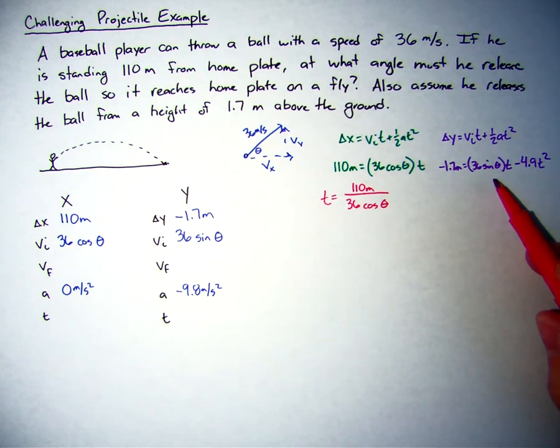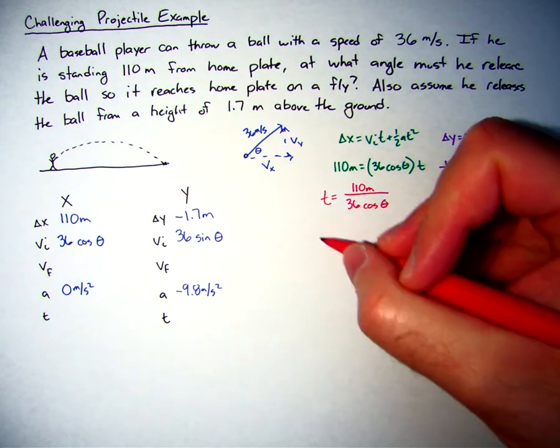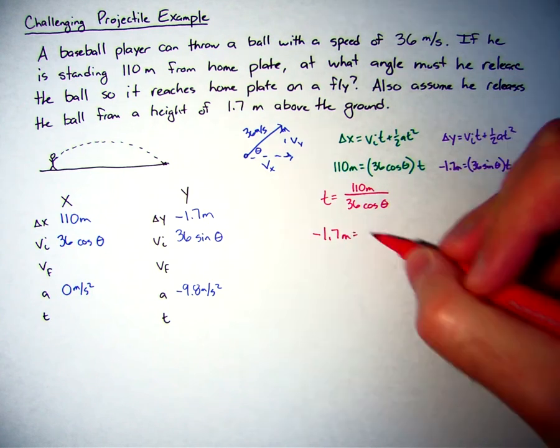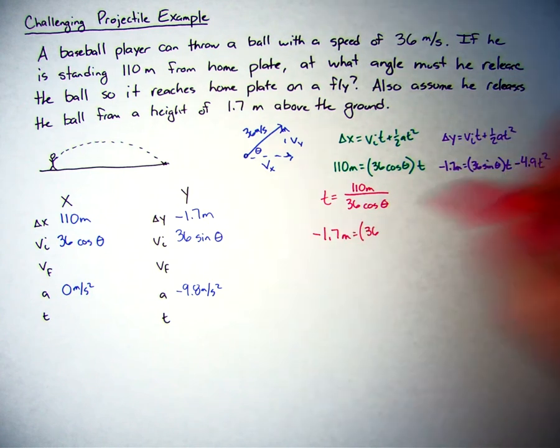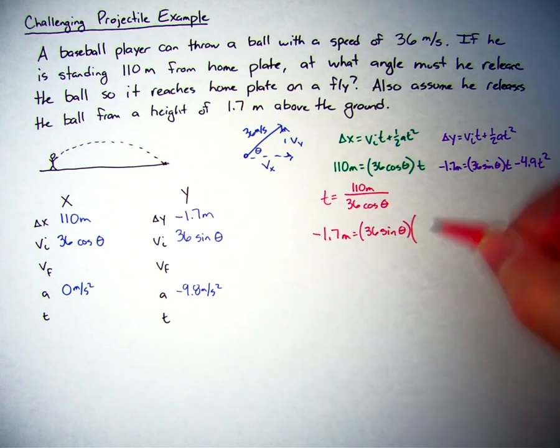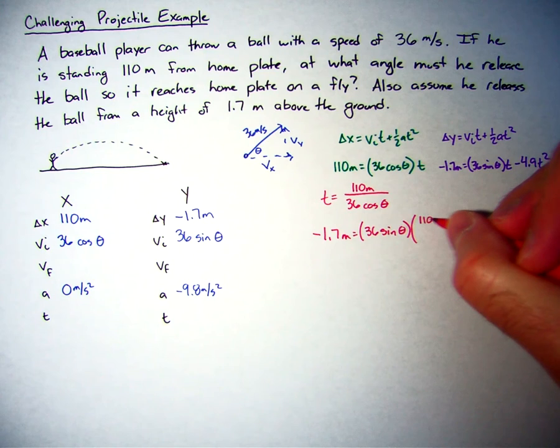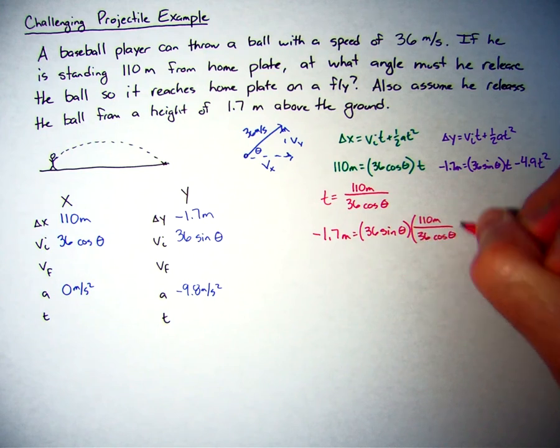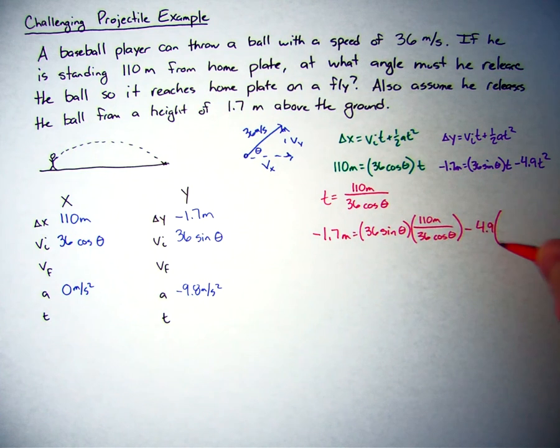Now, if I just take that and substitute that into the y equation, here's what I'm going to get. Negative 1.7 meters equals 36 sine of theta times t. This is t, so 110 meters divided by 36 cosine of theta minus 4.9 t squared, so times 110 meters over 36 cosine of theta squared.